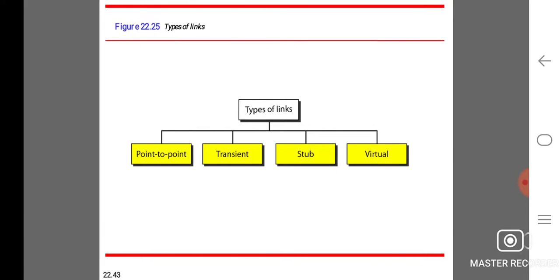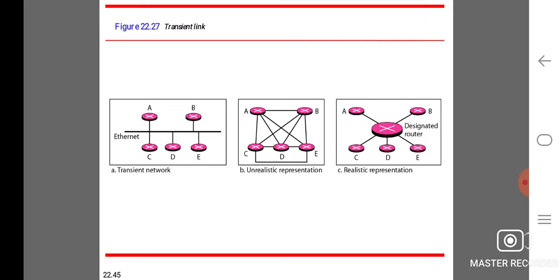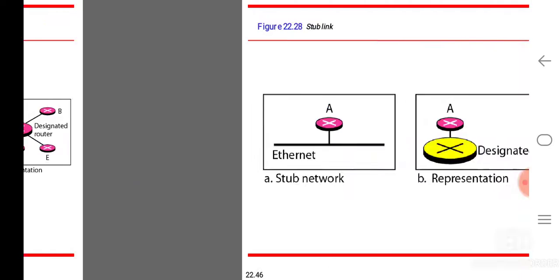Types of links: point-to-point, tangent, stub, and virtual. Point-to-point link connects two routers using the point-to-point link. Tangent link: figure A represents the tangent link, B represents the unrealistic representation, and C represents the realistic representation.